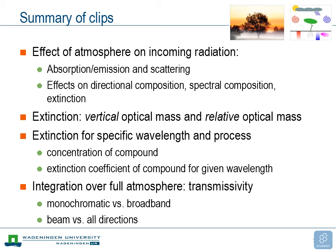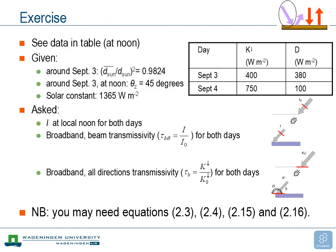The extinction is also different for specific wavelengths. For absorption, both the concentration of the compound and its extinction coefficient matter. Integrating all of this over the full atmosphere, we express it in terms of transmissivity. We can distinguish between monochromatic transmissivity for a single wavelength and broadband transmissivity integrating over all wavelengths. We also distinguish between beam transmissivity — following along the solar beam — versus all-direction transmissivity integrating over all directions of incoming radiation. The videos you watched as preparation covered these concepts, and now it's time to put them into practice.